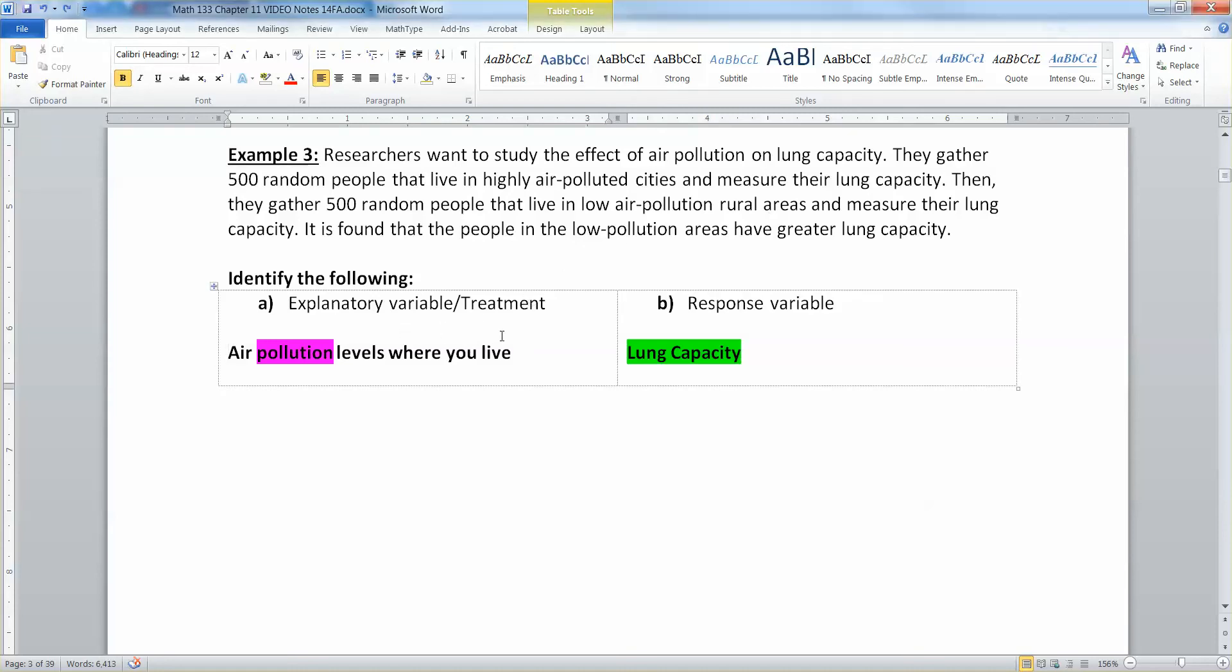So let's identify the explanatory variable of the treatment. Well, that would be the air pollution level where you live. So it's just air pollution level. And where you happen to live, that part really isn't necessary. Air pollution level.